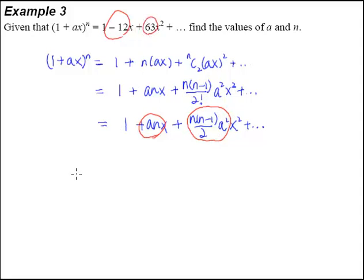So by comparing coefficients from the left and to the right, we know that an is equal to negative 12. And we also know that n multiplied by n minus 1 over 2 multiplied by a squared is equal to 63. So from here, I mean, this question now becomes a question of a pair of simultaneous equations, isn't it?